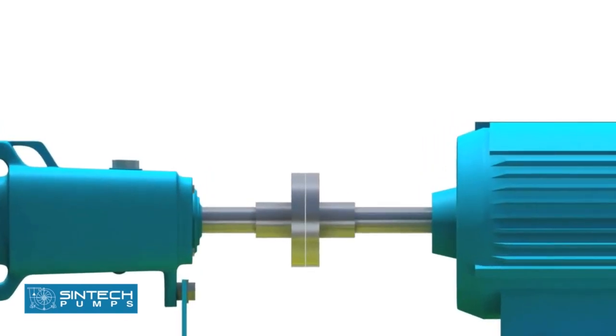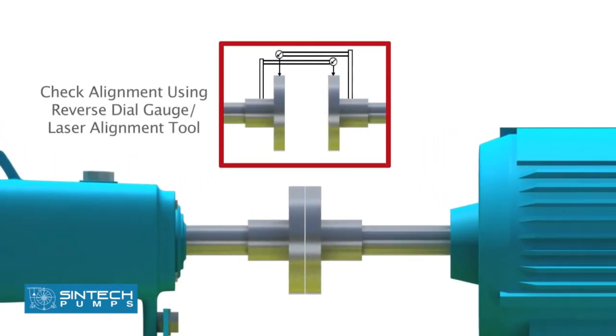In the subsequent step, the pump and the motor are aligned to the final tolerance using a reverse dial gauge or a laser alignment tool.